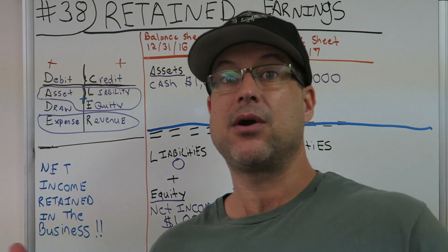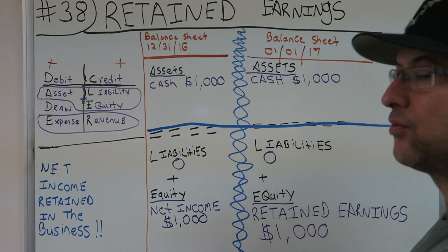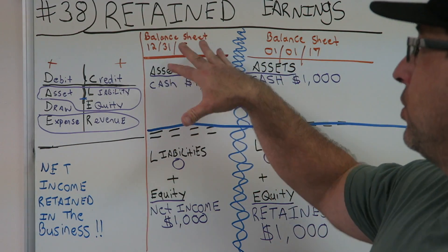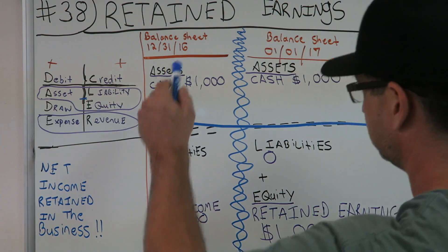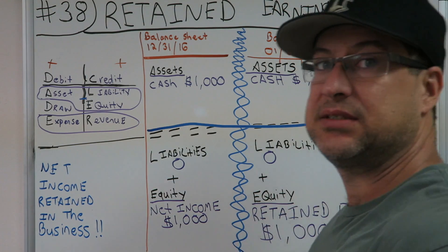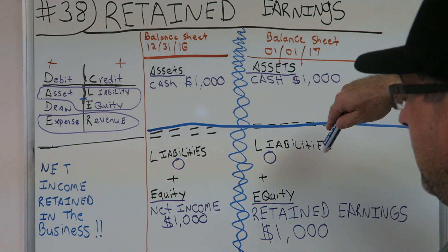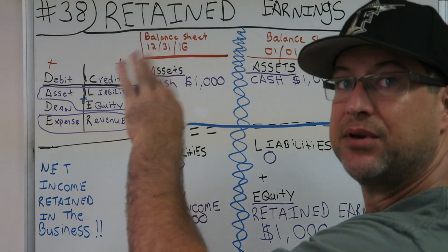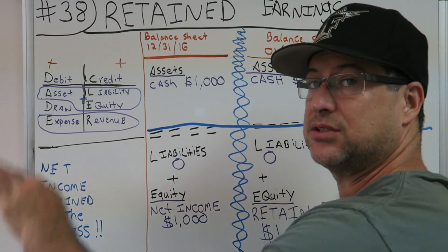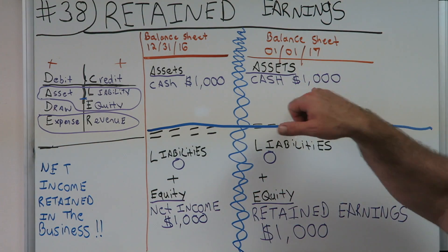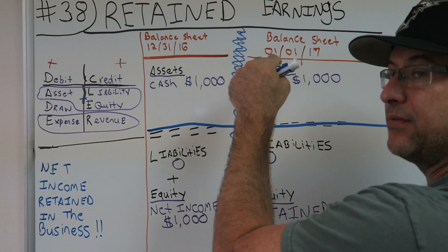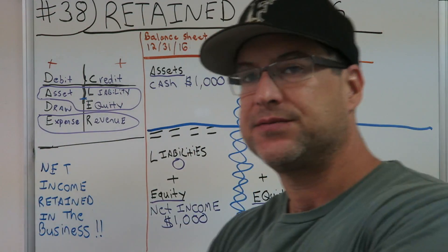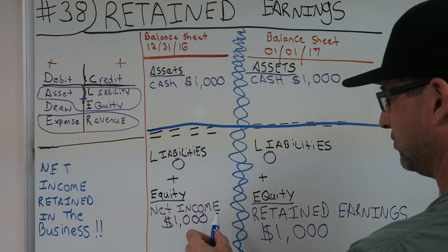So on 12/31 you're at a New Year's party, and the very next day — 01/01/17 — on the balance sheet it's just another day, but it's the start of a new period. The 2016 income statement is old now. Starting January 1st, 2017, you begin with a brand new income statement.